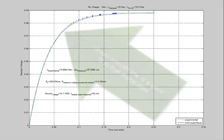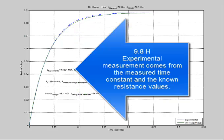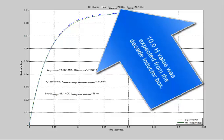The 9.8 Henry experimental measurement comes from the measured time constant and the known resistance values. 10 Henry value was expected from the decade inductor box.